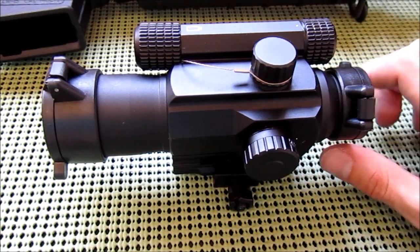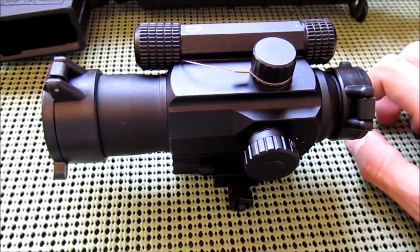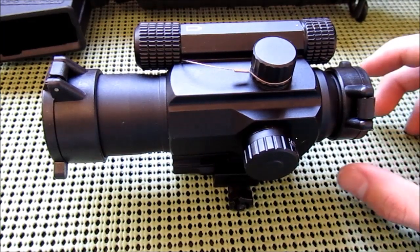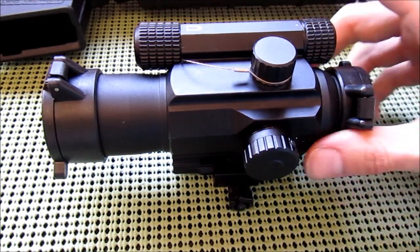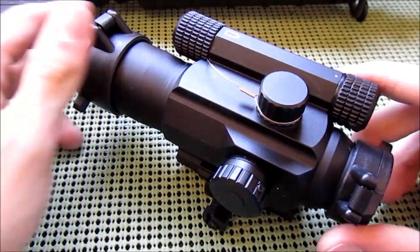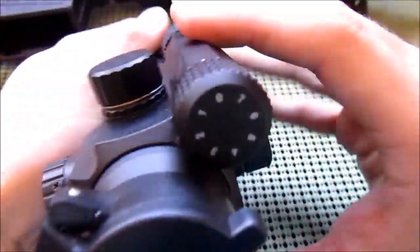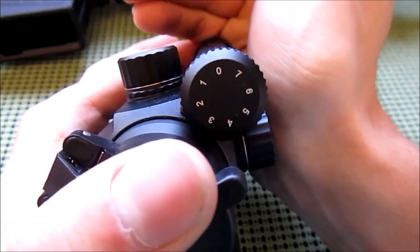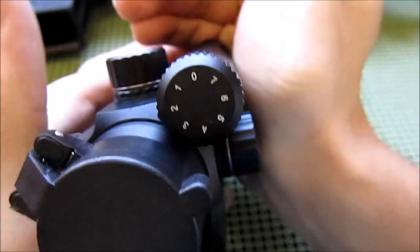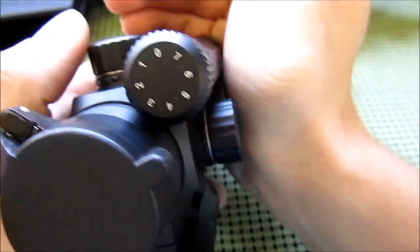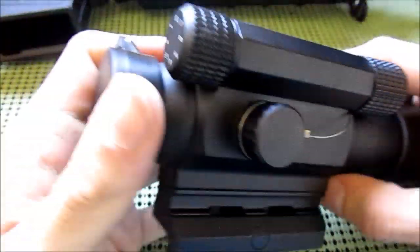This model with the multi-reticle is only $10 more than the one that has just a red dot. It takes a double A battery and has seven brightness settings.